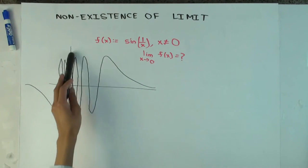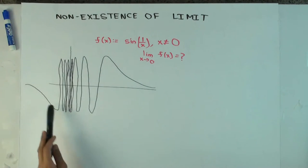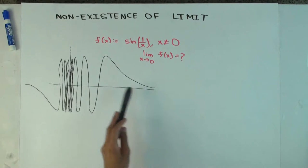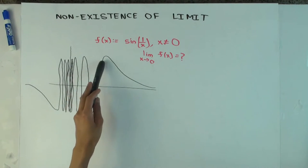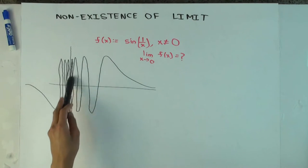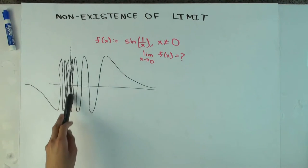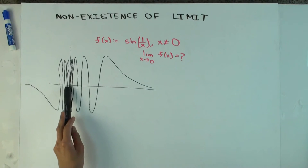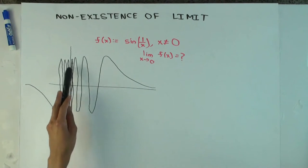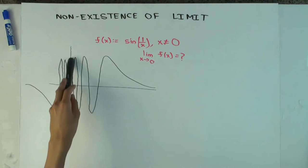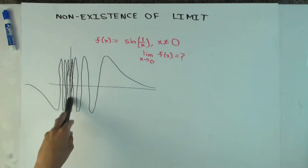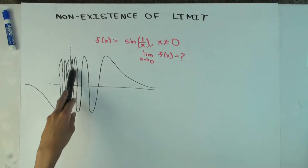Here is a graph of the function. This is the y-axis, x-axis. The function looks like this — it's oscillatory. And as you approach 0, it oscillates faster and faster.